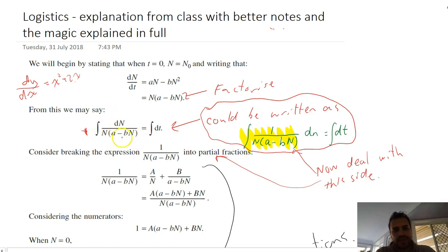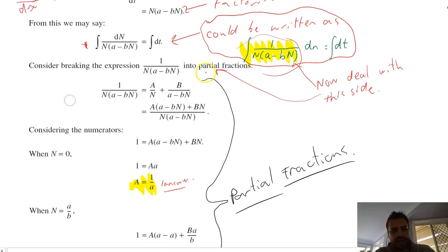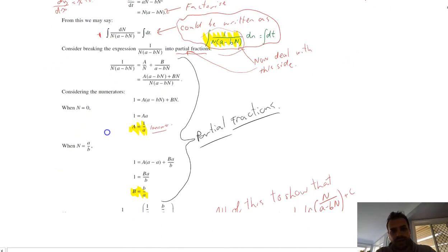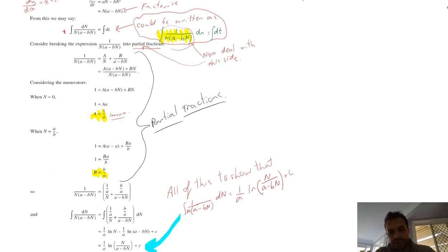You've seen this before. So we've rearranged it to look like that. Now, I always think that that's not totally clear. It's actually the integral of 1 over n a minus bn with respect to n equals the integral of dt. So now that you've got that, you only need to focus on the left-hand side because the left-hand side is the most complicated side. The integral of dt is simple. So to integrate this, you're going to have to use partial fractions.